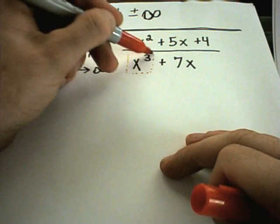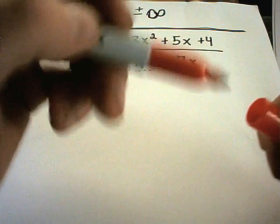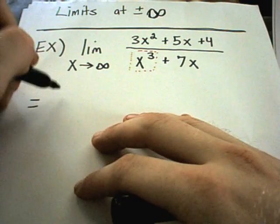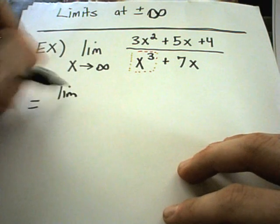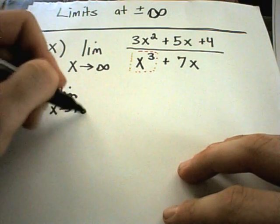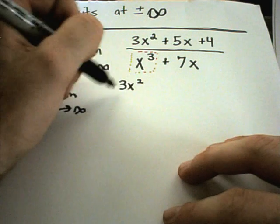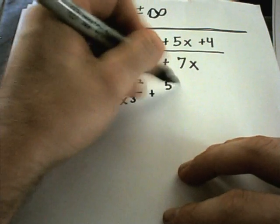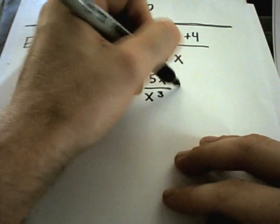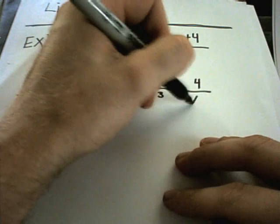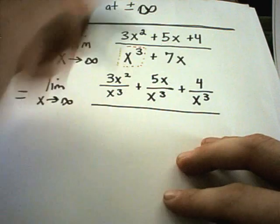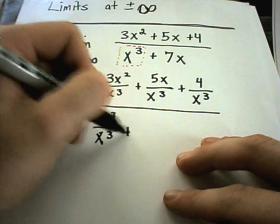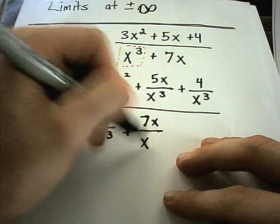In this case, my highest power of x is x cubed. What we're going to do is divide every single term in the problem by x cubed. So I'll get the limit as x goes to infinity. I'll take 3x squared divided by x cubed, 5x divided by x cubed, 4 divided by x cubed, x cubed over x cubed, and 7x over x cubed.